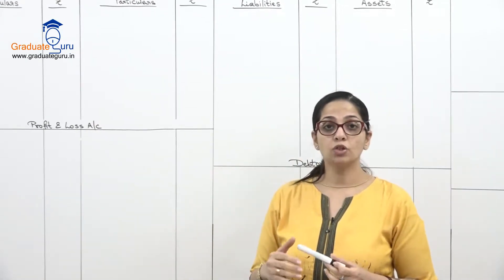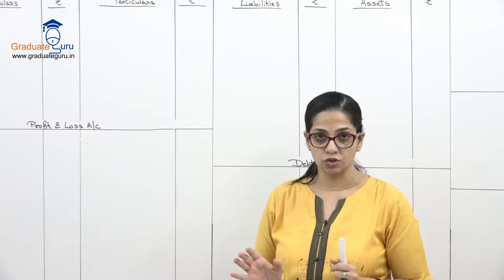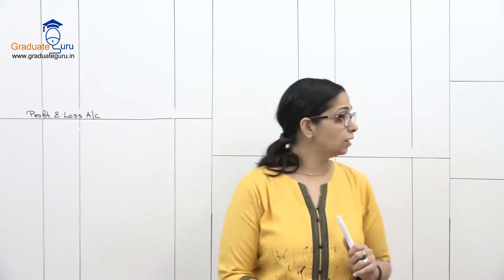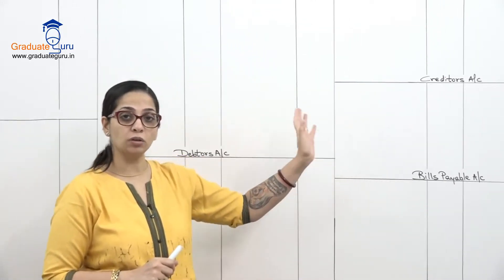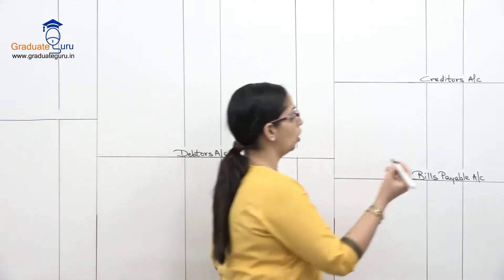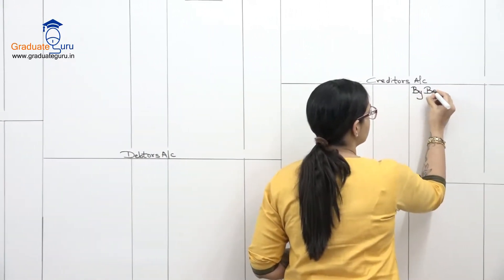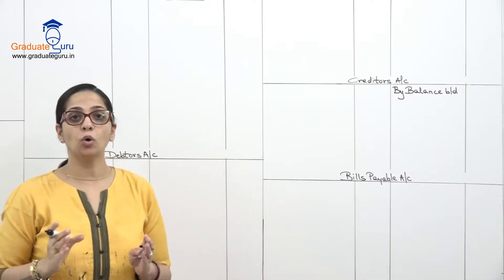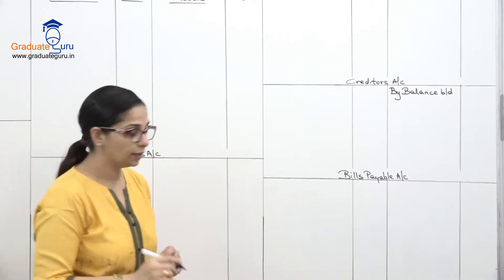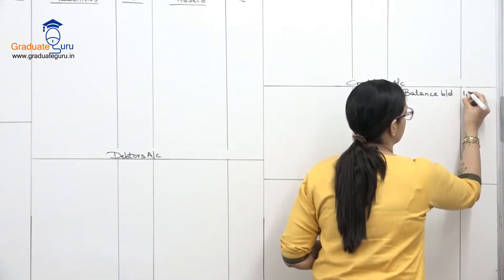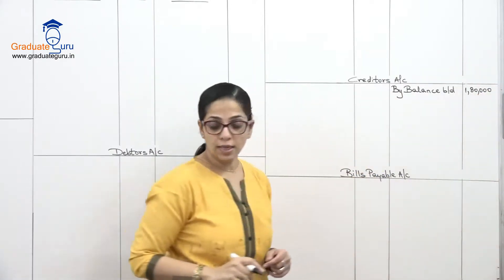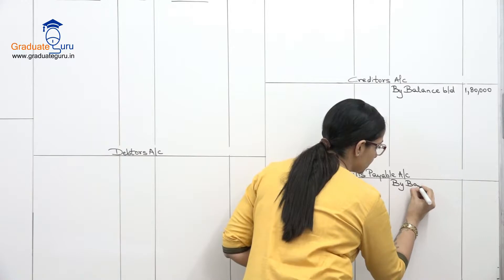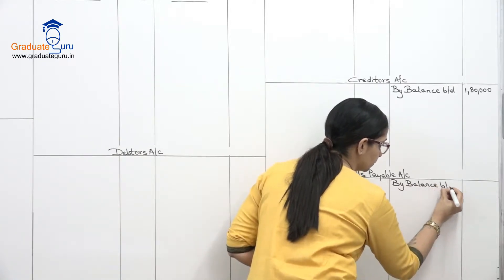Let's begin the sum. I'm going to empty my opening balance sheet. Bank overdraft and cash already have their second effect given. Starting with creditors: opening balance is always on the credit side, so I'll record it as balance brought down — creditors one lakh eighty thousand. Same way bills payable — balance brought down eighty thousand on the credit side.